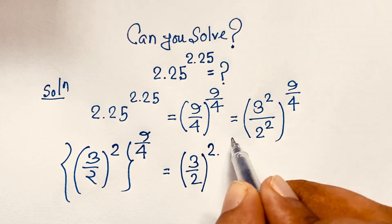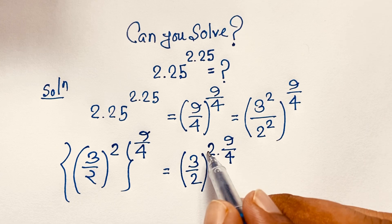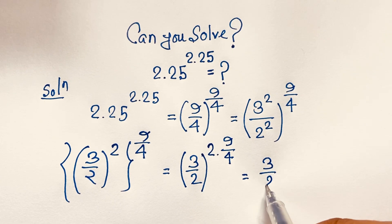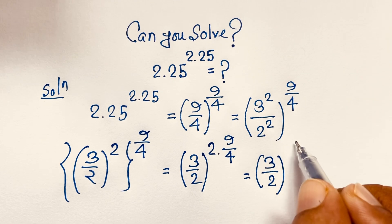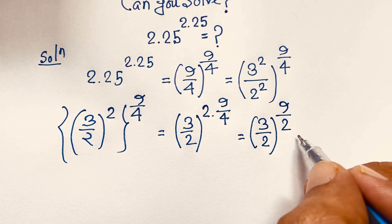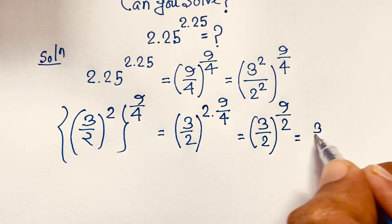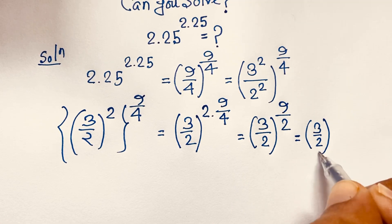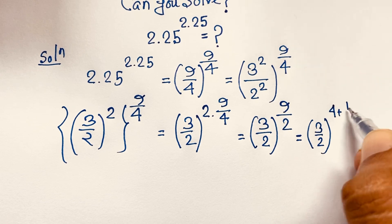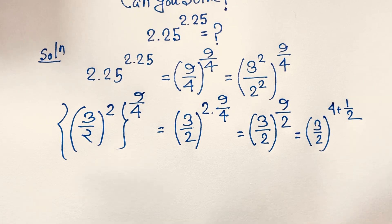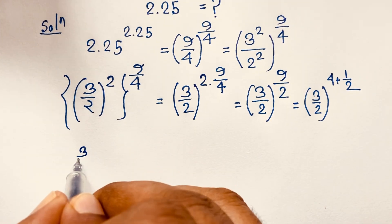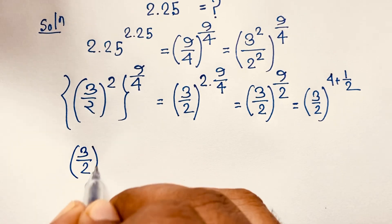Now 4 divides into 2, giving us 2, so the expression becomes (3/2) to the power of 9/2. We can split 9/2 as 4 plus one-half, since 4 plus 1/2 equals 9/2. According to the exponential formula, we separate this exponent.